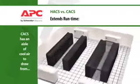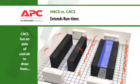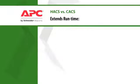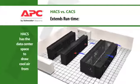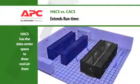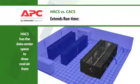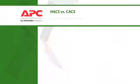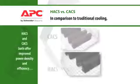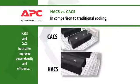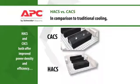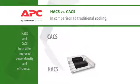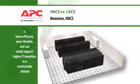A significant advantage that the hot aisle system has over the cold aisle system is the ability to extend runtime. In the event of a cooling failure, runtime is decreased with CACS because the cold air used to cool the IT equipment is drawn only from the center aisle. In HACS, the equipment will draw the cold air from the entire data center, resulting in fewer cooling failures and extended run times.